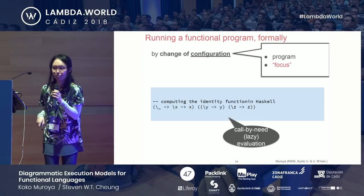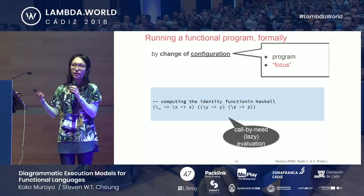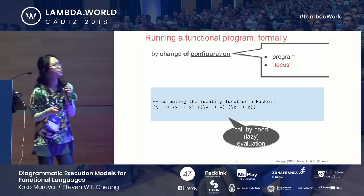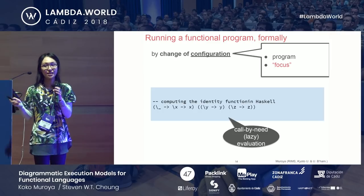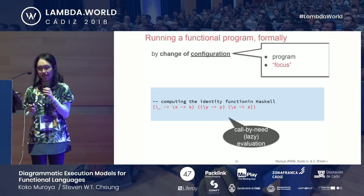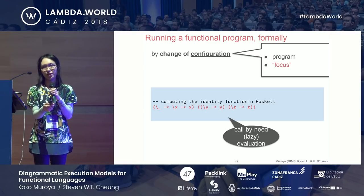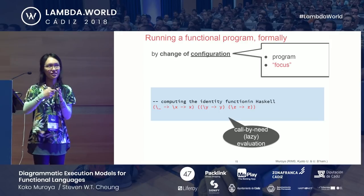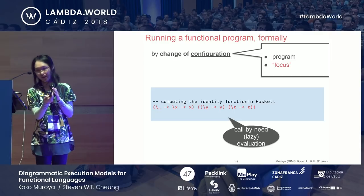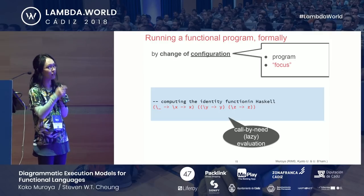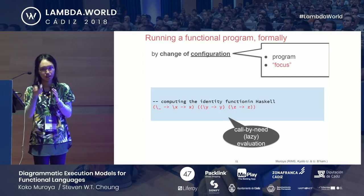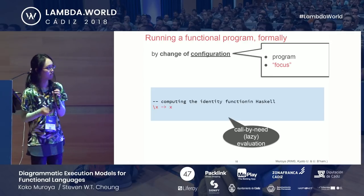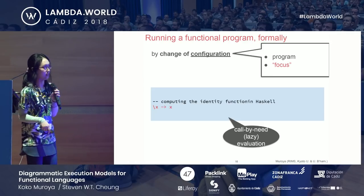Whereas in Haskell, the difference is in the way we move the focus. The initial configuration is always the same — we start from the whole program. But in call-by-need or lazy evaluation, the focus doesn't go to a function argument. It only looks at the function and sees the argument is going to be thrown away, so we get the result in one step.